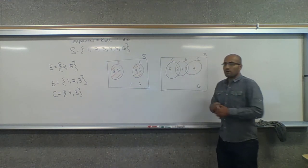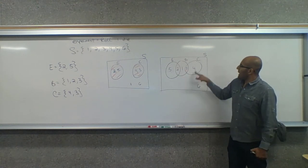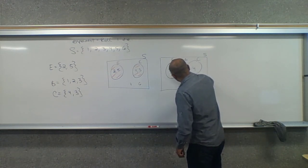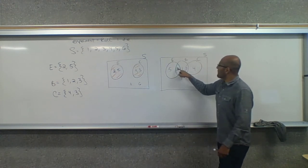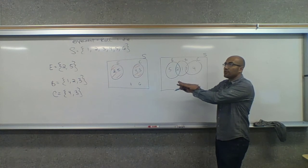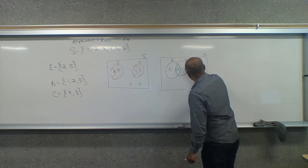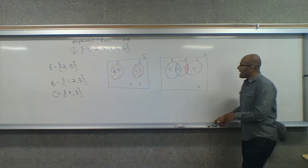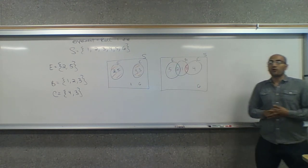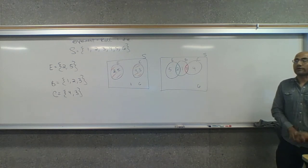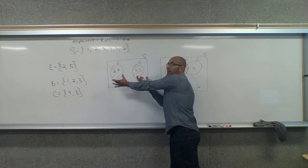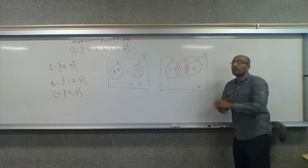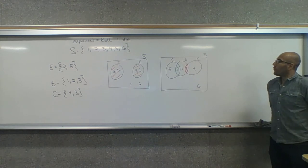Notice the overlap: two is common to both E and B, so it sits in their overlap region. Three is common to both B and C, so it sits in that overlap. That's why B and C are not disjoint, and E and B are not disjoint. We don't have a fancy word for 'not disjoint' — you just say not disjoint. Disjoint means no common outcomes; if they have something in common, we say they fail to be disjoint or fail to be mutually exclusive.